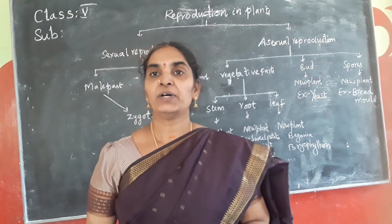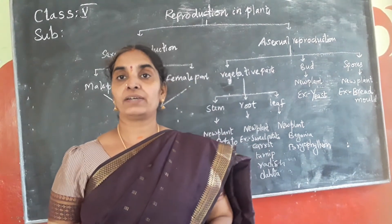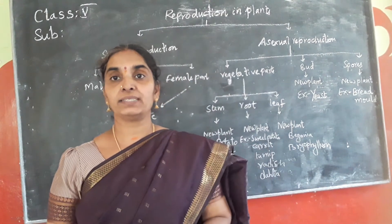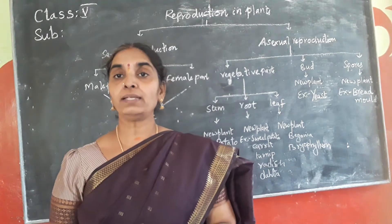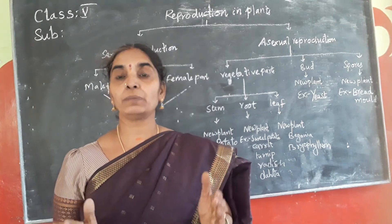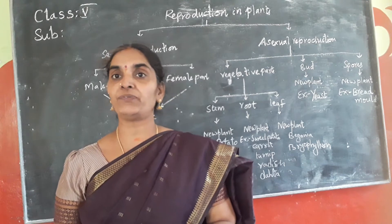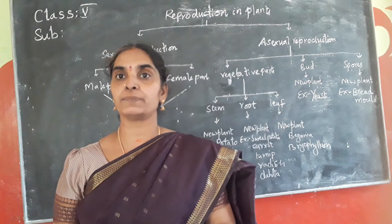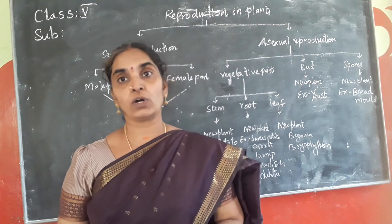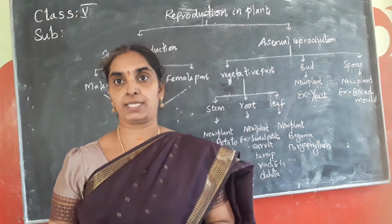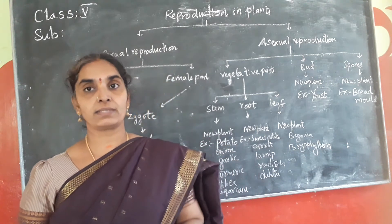Good morning children. Hope you are ready for today's class. We are doing about the reproduction in plants. You know that reproduction means the continuation of the species. It is the ability of living organisms to produce their offspring of their own species. So that is called reproduction.